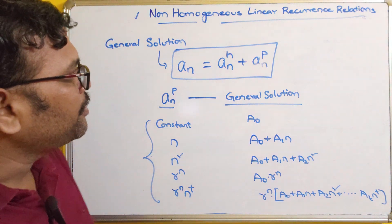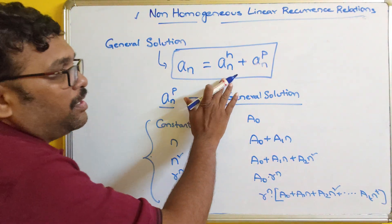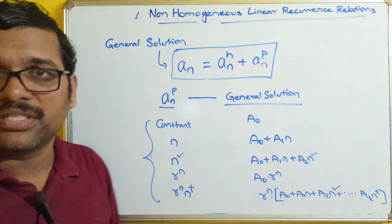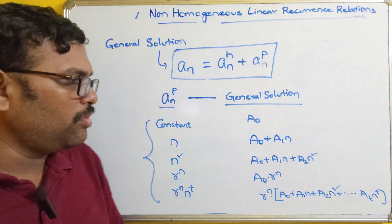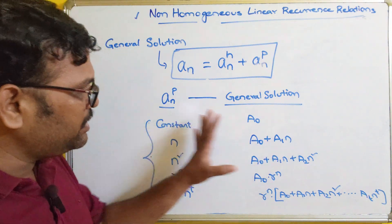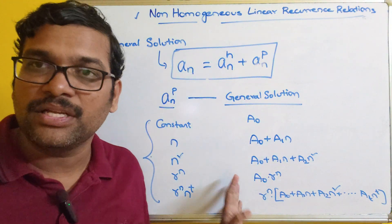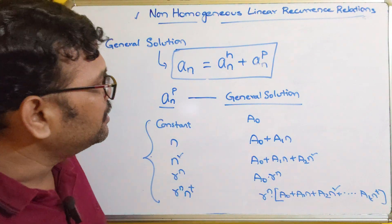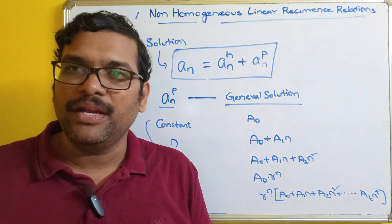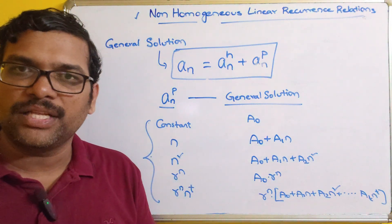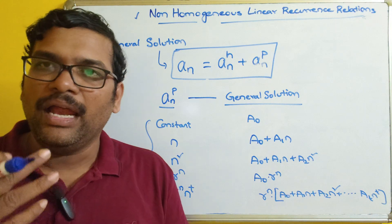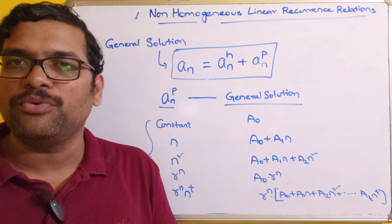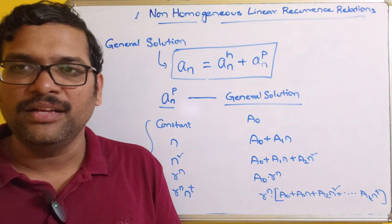If it is homogeneous, we only calculate a(n)_h. But if it is non-homogeneous, there will be some function applied, and we apply the corresponding general solution from these cases. After applying, we apply the initial conditions to find the constants. Just remember these general solutions for non-homogeneous linear recurrence relations and we will solve one problem in our next session. If you have any doubts, feel free to post in the comment section. If you enjoyed the session, like, share, and subscribe to our channel. Thanks for watching.